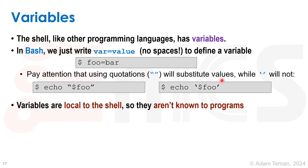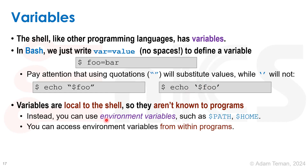Variables are local to the shell, so if I start a program from my shell, it won't know about a local variable. That's why we have environment variables — those are known to any program that I open from within the shell, and then the program can access those variables. We can configure things by putting them in environment variables, then opening a program, and the program will be able to access those settings.